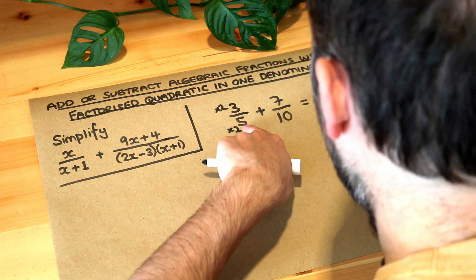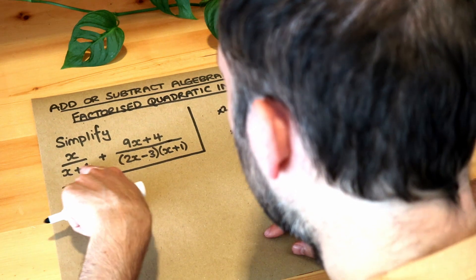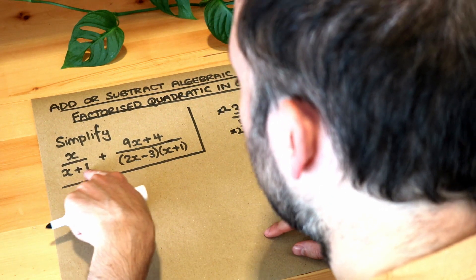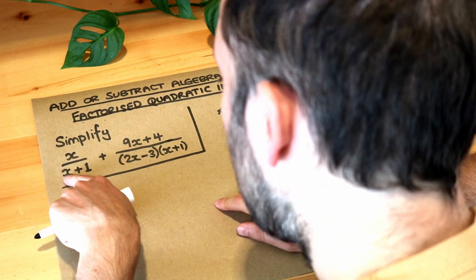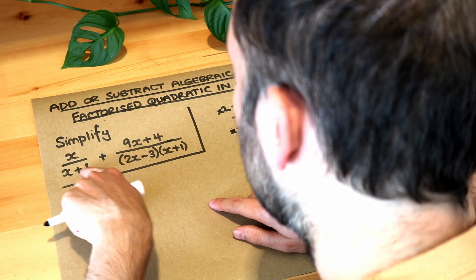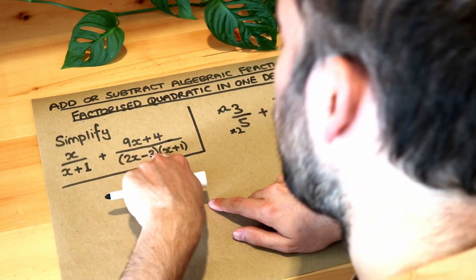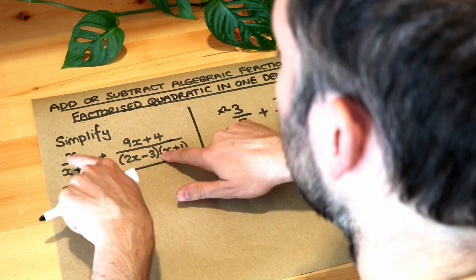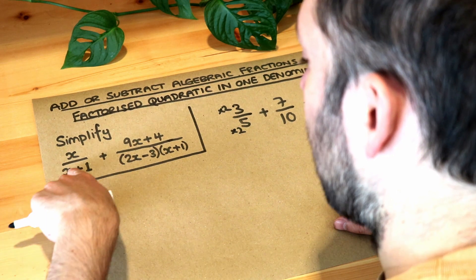So just like here, I multiplied the 5 by 2 so they were both 10. Think with this fraction here what could you multiply this denominator by so that it's the same as this denominator over here? Well the x plus 1, I could just multiply it by 2x minus 3 because then you'll have 2x minus 3 times x plus 1 which is exactly what we've got here then you'll have the same denominator.